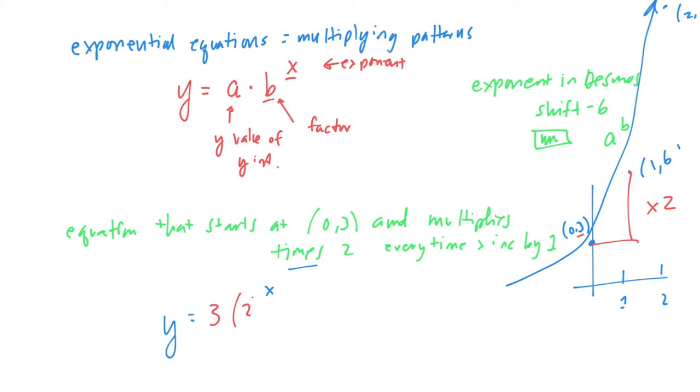So instead of adding plus two, we're multiplying times two. We can either put it in parentheses, or we could write it another way. We could write it y equals three times two to the x power, and this is just shift eight is a shortcut to a multiplication.